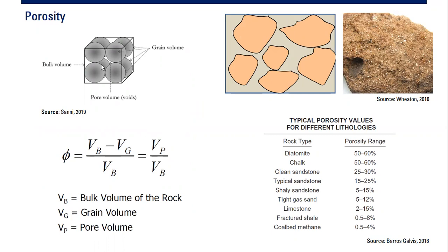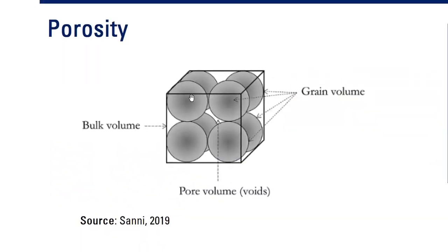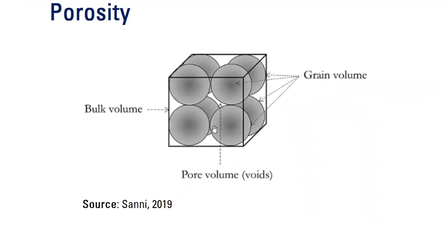If you have this model of rock, the total volume is called bulk volume. The balls represent rock grains, and the volume of them we call grain volume. The spaces between the grains — the voids — we call pore volume.